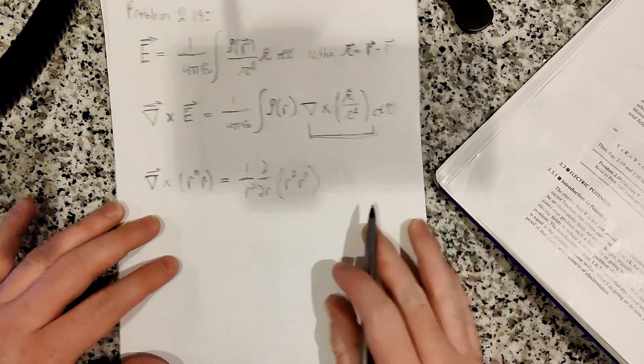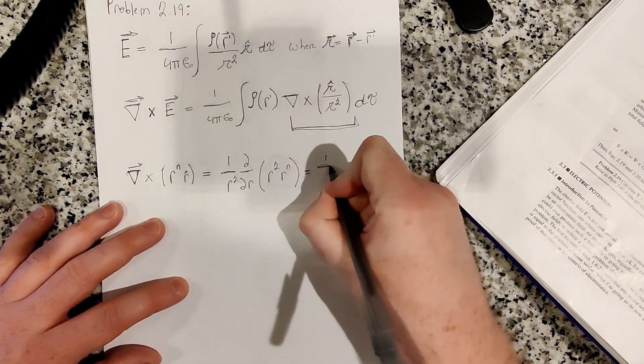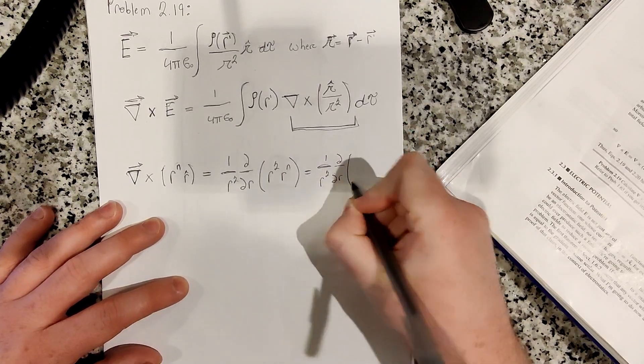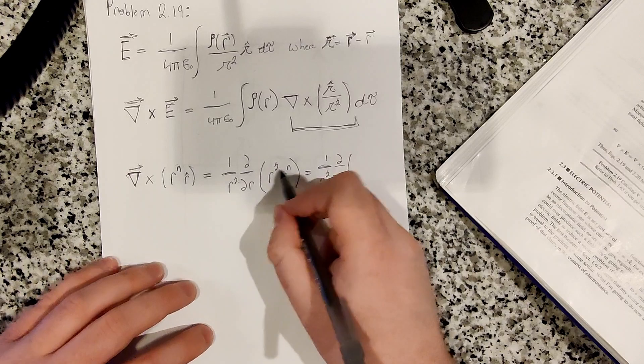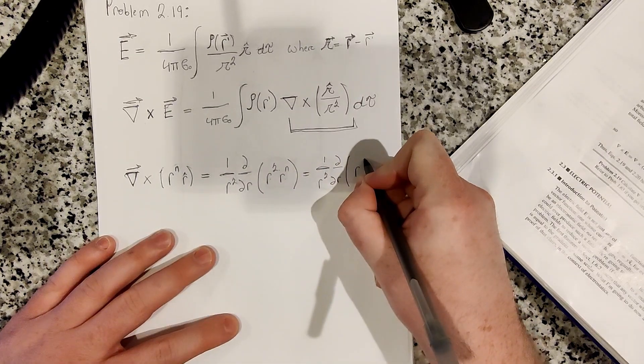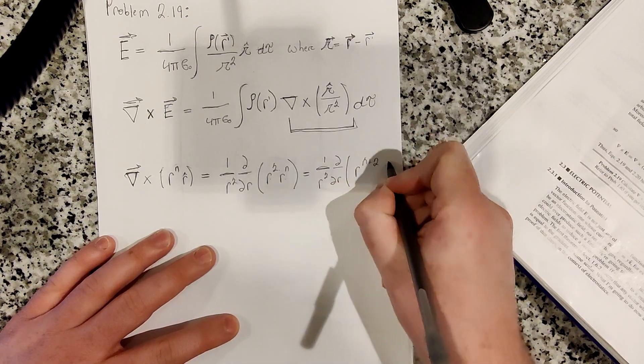All right. So let's go ahead and simplify this. So this is 1 over r squared, derivative with respect to r. And so r to the n times r squared is r to the 2 plus n power. So I'll write n plus 2 power.